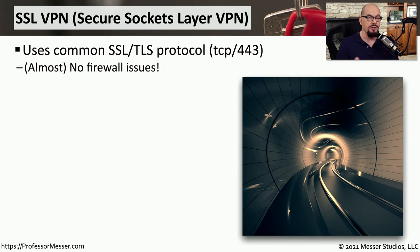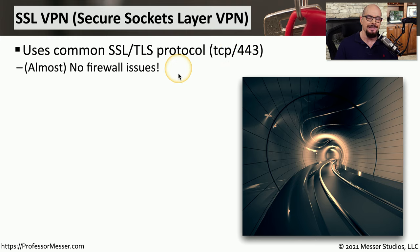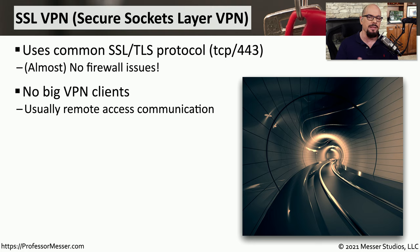For individual users communicating to a network, especially from a coffee shop, a hotel, or from home, you might be using an SSL VPN, or Secure Sockets Layer VPN, which communicates over TCP port 443. Since that's such a common port for SSL communication, it's one that commonly works on any network you happen to connect to. This also doesn't need any big VPN clients and is not incredibly complex. You're usually providing remote access from a single device using this SSL VPN.